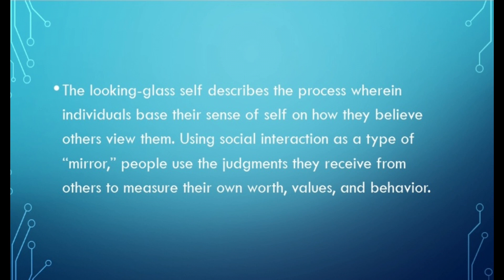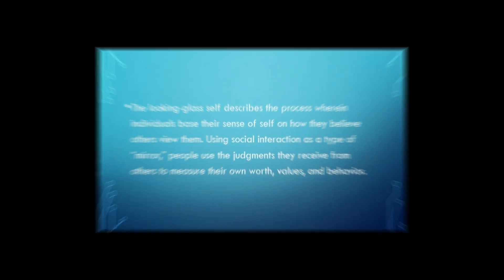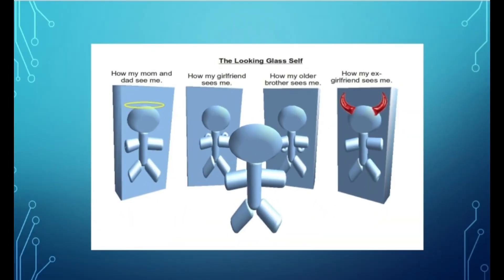People use the judgment they receive from others to measure their own worth, values, and behavior. جو وہ person ہوتا ہے وہ اپنی worth، value، behavior کس طرح judge کرتا ہے — اس چیز کے اوپر کہ دوسرے اسے کس طرح receive کر رہے ہیں۔ دوسرا person جو کہ mirror ہے، وہ اس کو کس طرح سے judge کر رہا ہے — وہ person اپنے آپ کو ویسا سمجھتا ہے۔ اس کو کہتے ہیں Looking Glass Self Theory۔